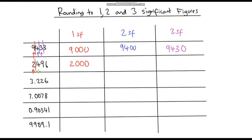For two significant figures, the second significant figure is next. We draw a line and look at the 9 — this time it is greater than 5, so we round this number up. This becomes a 5, so our number is 2,500. For three significant figures, the third significant figure is next, and we look at the 6. That's greater than 5 so we round up. The digit goes to a 10, so that 4 gets rounded up to a 5 — giving 2,500. So it's exactly the same result when we round to 3 significant figures as when we rounded to 2.